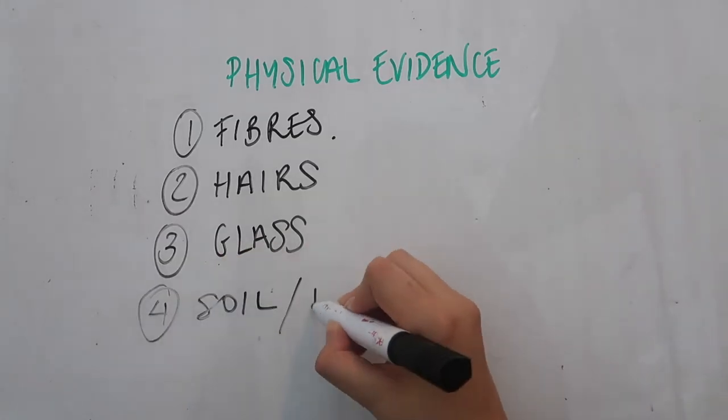Soil and plant matter evidence — things like dirt on the bottom of your shoe or the leaves in a footwell of a car — are transferable evidence. If you've had a walk through a forest and then got back into your car, you've transferred that plant matter from the forest floor into the footwell of your car. This sort of evidence can be used to create a profile, as the types of soil and plant matter can be matched to particular places, placing you in a specific location.